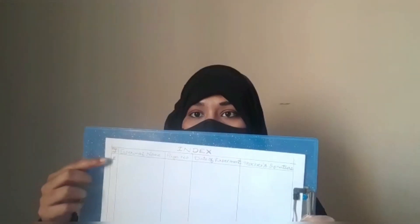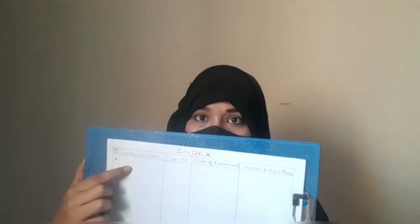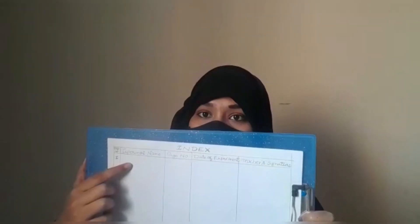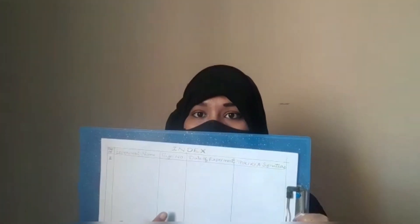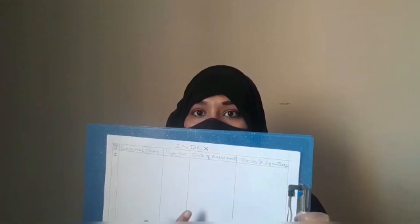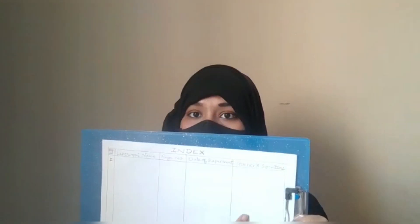For writing zoology record, you have to purchase plain sheets. Let's start with the index first. This is the index part. You have to write experiment number, experiment name or name of the experiment, page number, date of experiment, and teacher's signature. This will be your index.